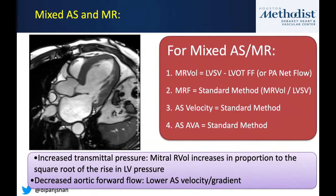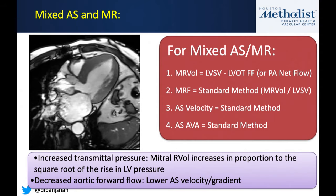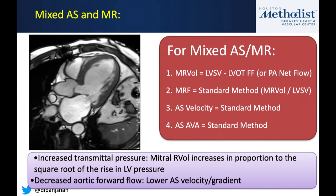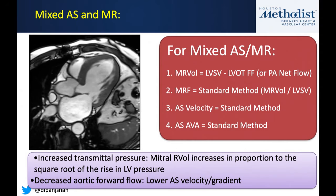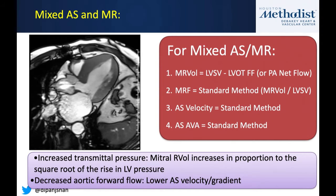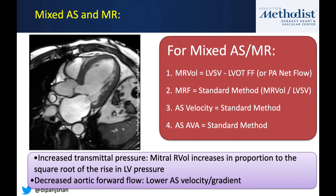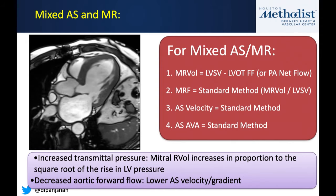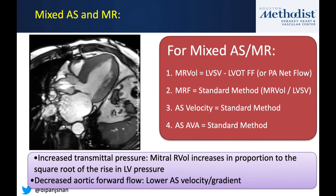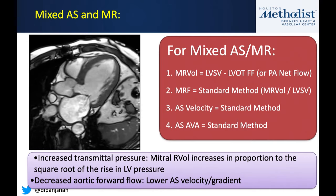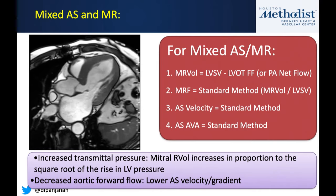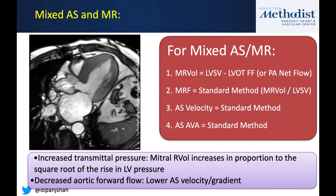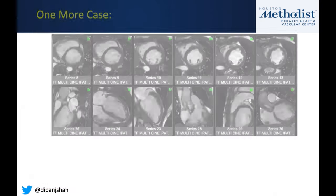Key caveat for mixed AS and MR: compare LV stroke volume to LVOT flow rather than ascending aorta flow, because turbulent flow beyond the stenotic valve can cause underestimation. The MR fraction calculation uses the same methodology as isolated mitral valve lesions. Also recognize that mixed AS and MR can make color Doppler jets appear more prominent despite mild MR severity, due to the elevated LV pressure from AS.